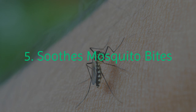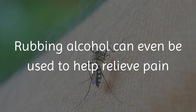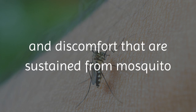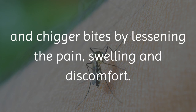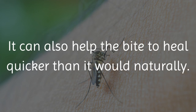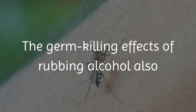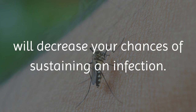5. Soothes Mosquito Bites. Rubbing alcohol can be used to help relieve pain and discomfort from mosquito and chigger bites, by lessening the pain, swelling, and discomfort. It can also help the bite to heal quicker than it would naturally. The germ-killing effects of rubbing alcohol will also decrease your chances of sustaining an infection.